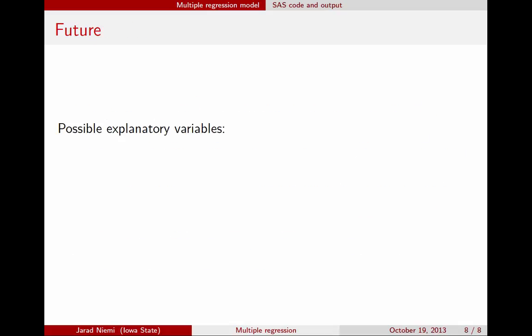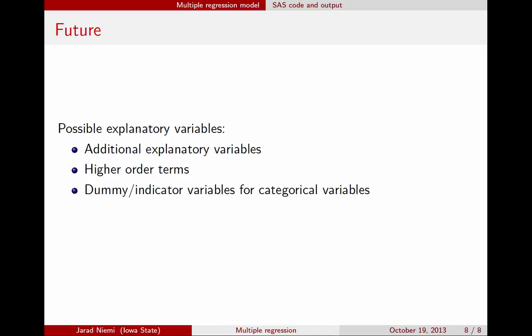This has been a quick introduction to multiple regression and interpreting the parameters. In the future, we'll talk about other possible explanatory variables. Today we covered adding additional continuous explanatory variables — for instance, adding nitrate concentration alongside max depth. Other options include higher-order terms like a quadratic, where if you thought the response to nitrate concentration increases then decreases, you might include nitrate concentration squared.